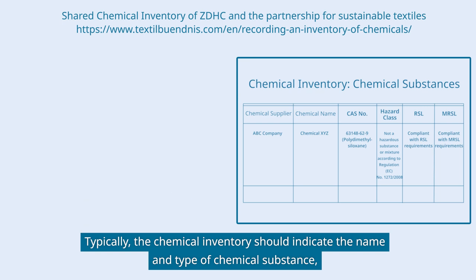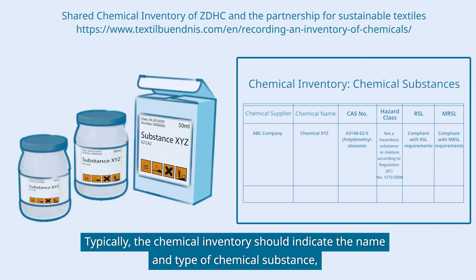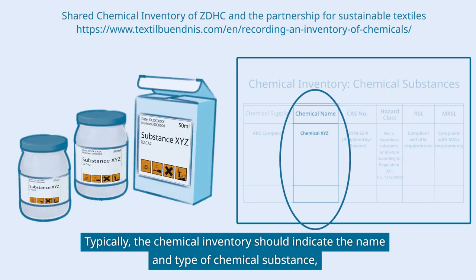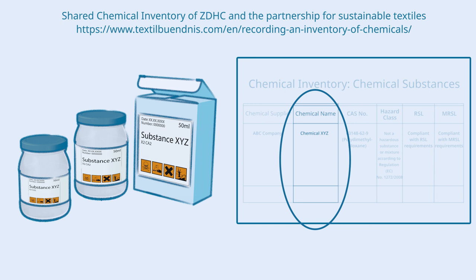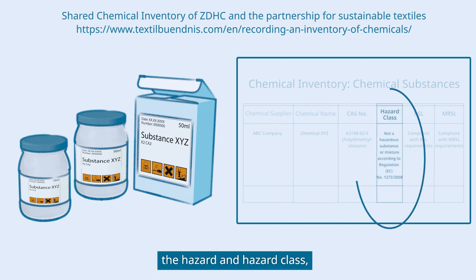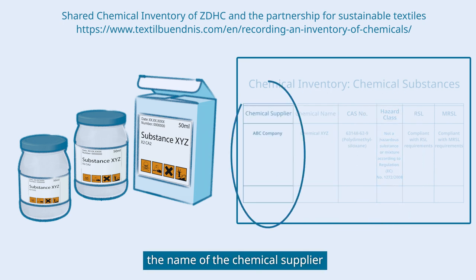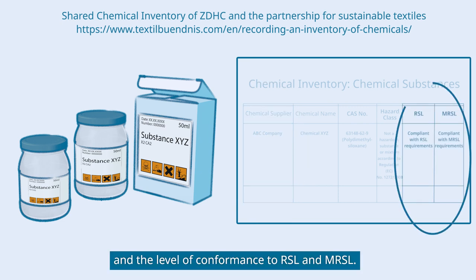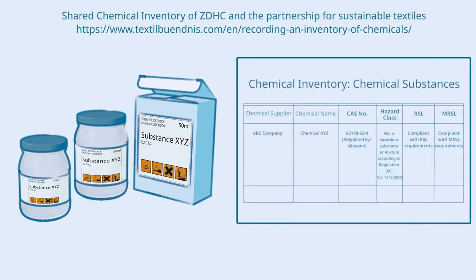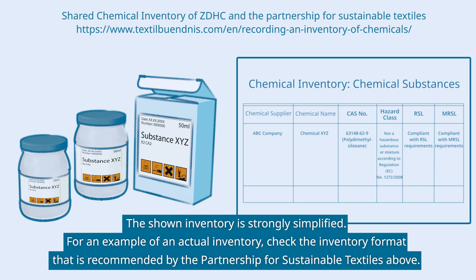Be aware that your buyers may have specific expectations regarding the format of such inventory. Typically, the chemical inventory should indicate the name and type of chemical substance, the hazard and hazard class, the name of the chemical supplier, and the level of conformance to RSL and MRSL. The shown inventory is strongly simplified; for an example of an actual inventory, check the inventory format recommended by the Partnership for Sustainable Textiles.